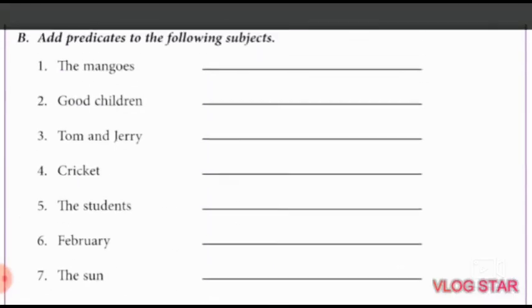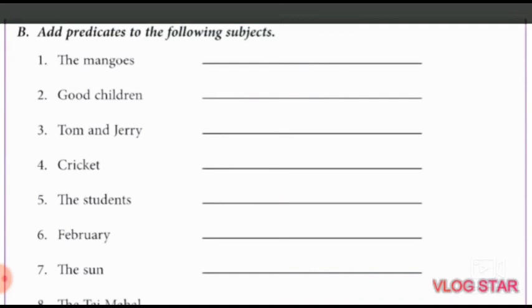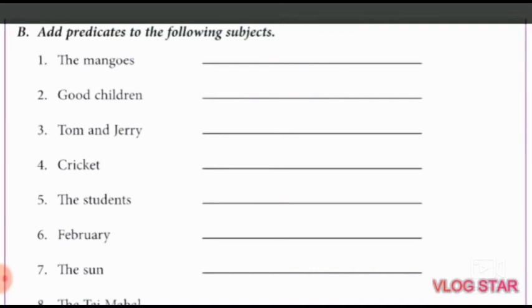Next exercise, Exercise number B. Add predicate to the following subject. Number one, the mangoes. Mangoes is the subject. You have to add a predicate. The mangoes smell sweet.